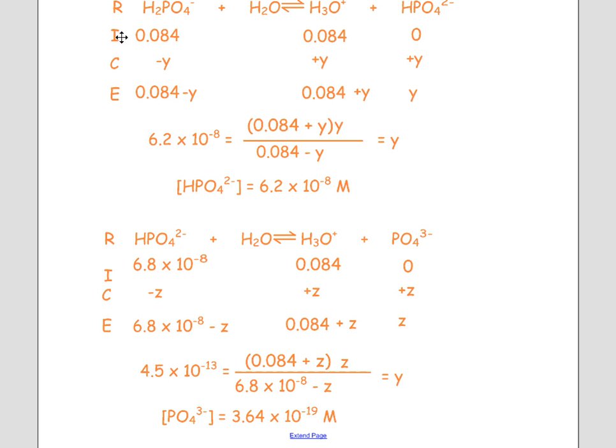I use those first two concentrations to set up the next RICE problem, where dihydrogen phosphate becomes hydrogen phosphate. Just like in the carbonate, carbonic acid problem, the math here is pretty simple.